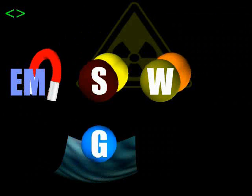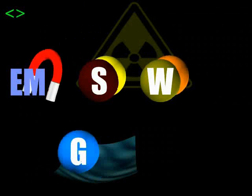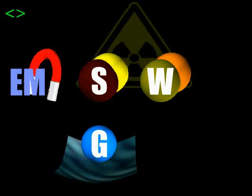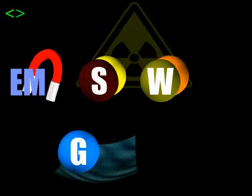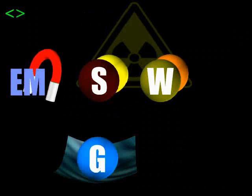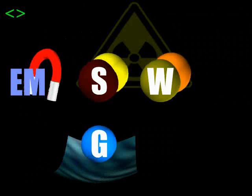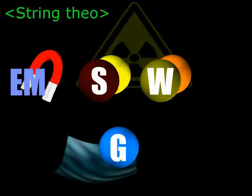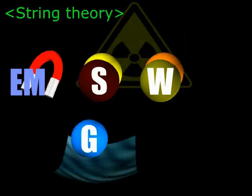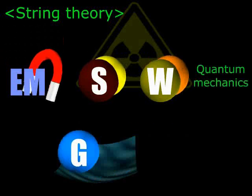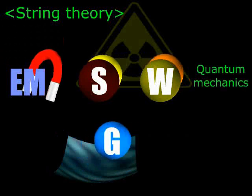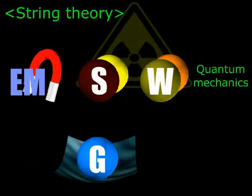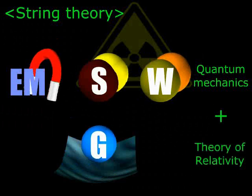String theory is a result of scientists' attempt to come up with the theory of everything, by unifying the electromagnetic force and the strong and weak nuclear forces predicted by quantum mechanics, with the gravitational force explained by Einstein's theory of relativity.